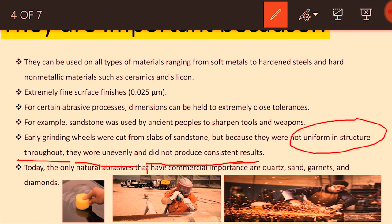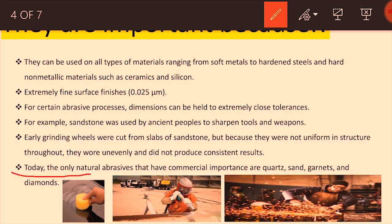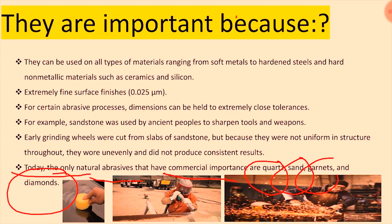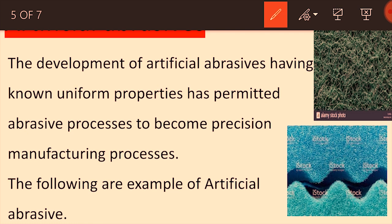With synthetic abrasives, these shortcomings are overcome. Today the commercially important natural abrasives include sandpaper, garnet, and diamond. These are natural abrasives still used nowadays. Now let's move on to what artificial abrasives are.